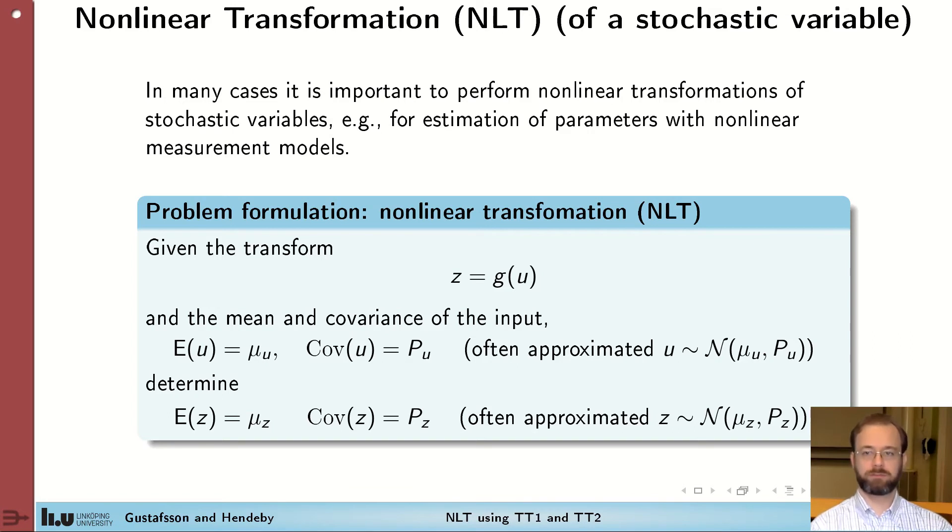Often we denote this with Gaussian distributions, but that's just an approximation. z is rarely ever Gaussian, especially not if g is non-linear.